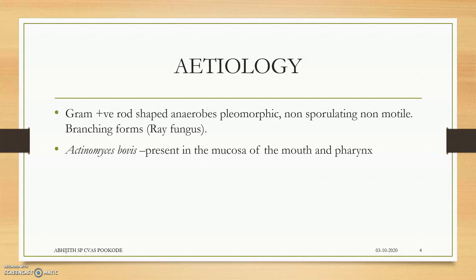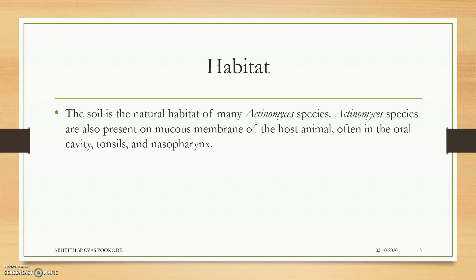The etiology: it is gram-positive, rod-shaped anaerobes, pleomorphic, non-sporulating, non-motile branching forms. It has got branching forms, which is the reason why it is called ray fungus — that branching appearance. They are normally present in the mucosa of the mouth and the pharynx.